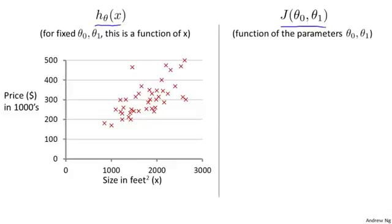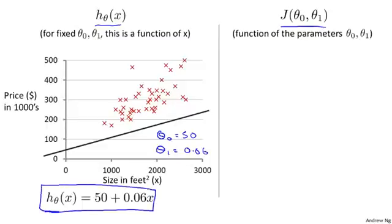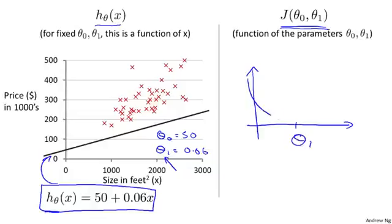Here's my training set of housing prices and let's pick some hypothesis. If I set theta zero equals 50 and theta one equals 0.06, then I end up with this hypothesis, which corresponds to that straight line. Given these values of theta zero and theta one, we want to plot the corresponding cost function on the right. When we only had theta one, we drew plots as a function of theta one alone, but now we have two parameters, theta zero and theta one, and so the plot gets a little more complicated.